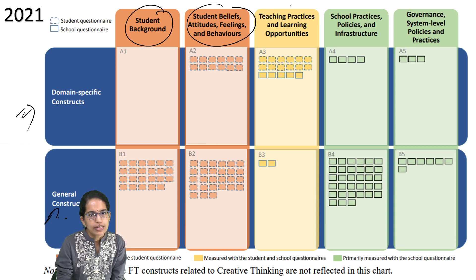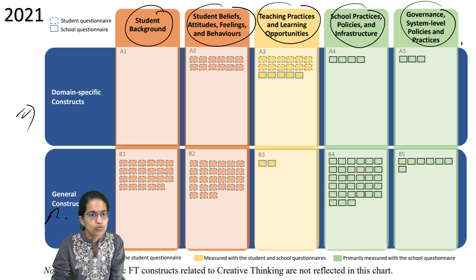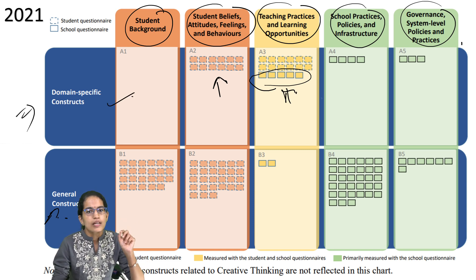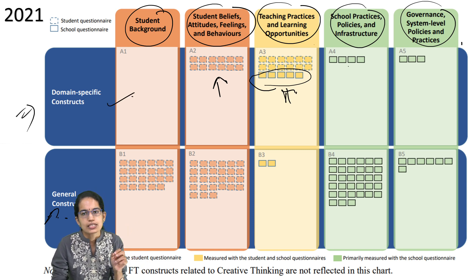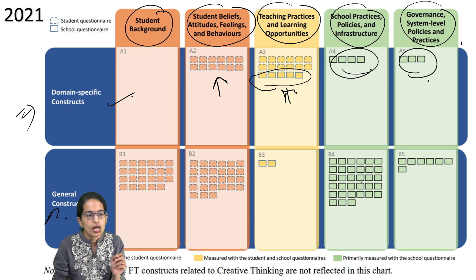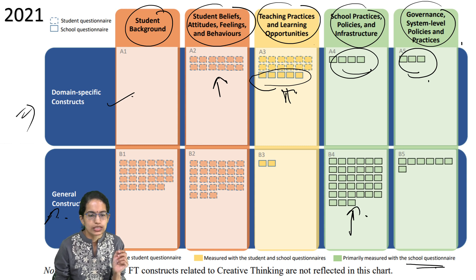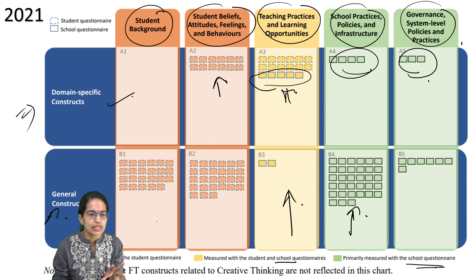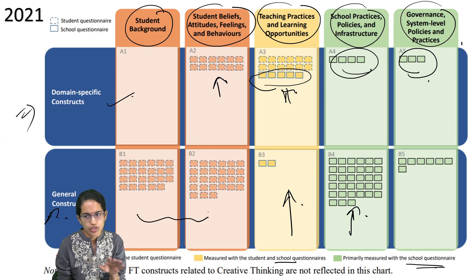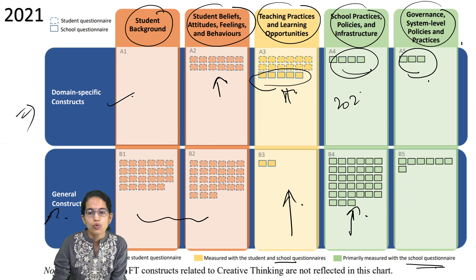The 2021 framework covers student background, attitudes, beliefs, teaching practices, school practices, and governance systems. Questionnaires are designed for both students and schools. Domain-specific questionnaires focus on teaching practices, school practices, and governance, while general construct questionnaires are constructed with both student and school inputs. Some questionnaires are exclusively for students.